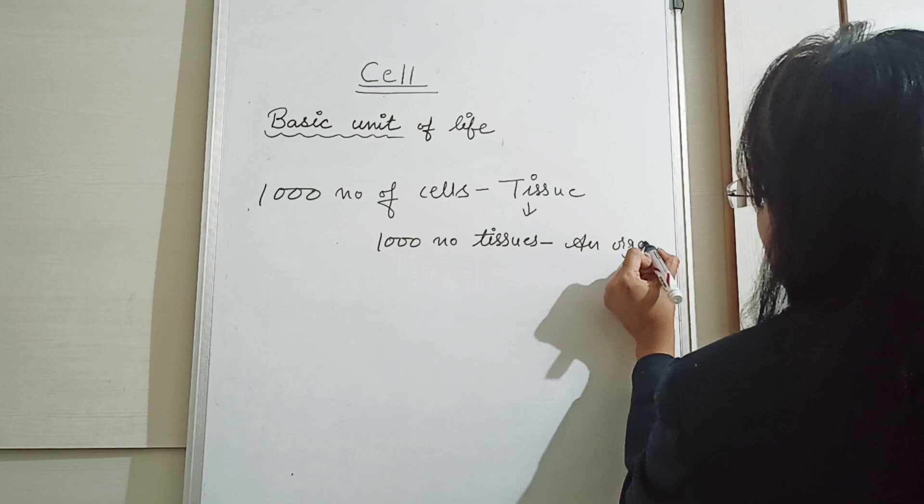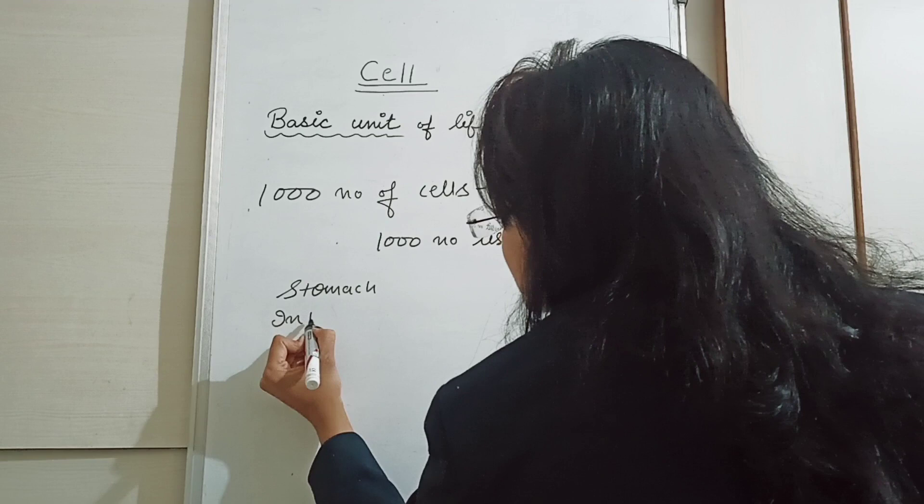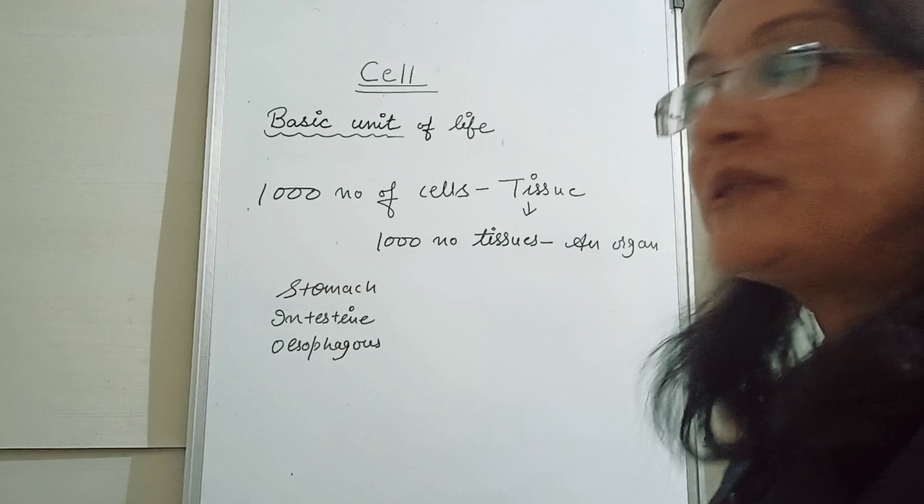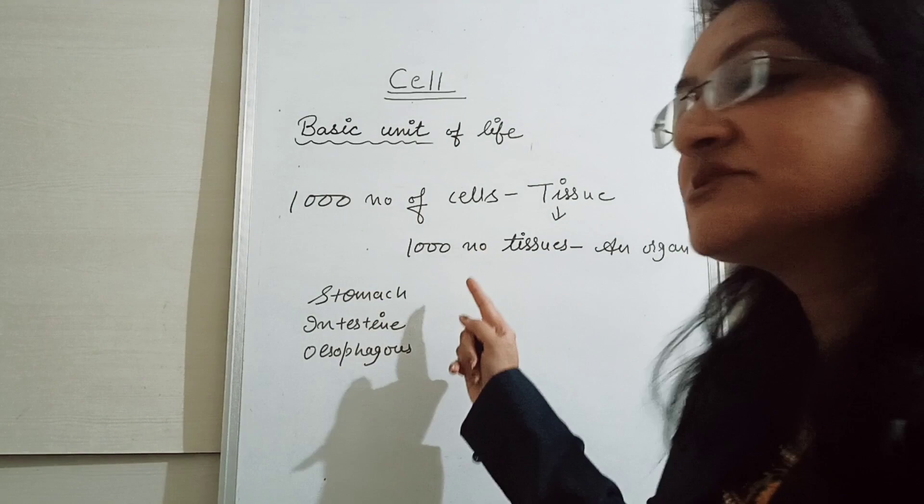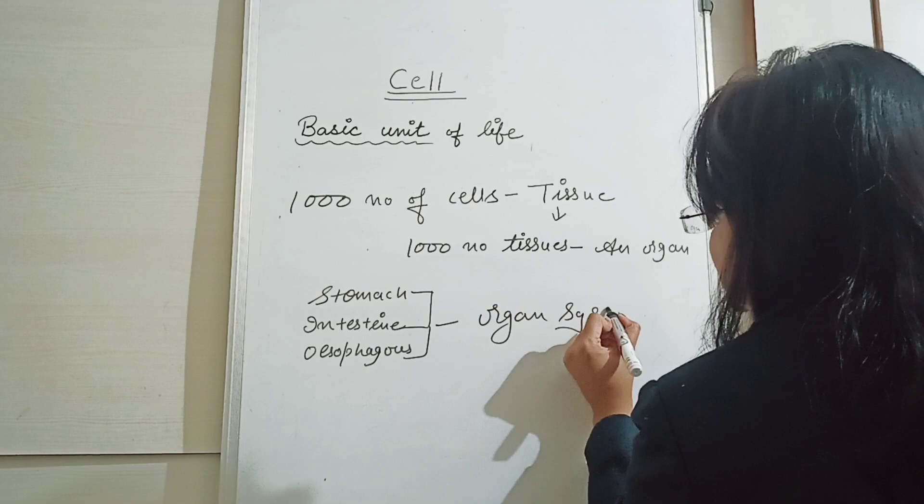Which organs can they be? They can be stomach, intestine, and so on. Now, all these organs together will combine to form what? An organ system.